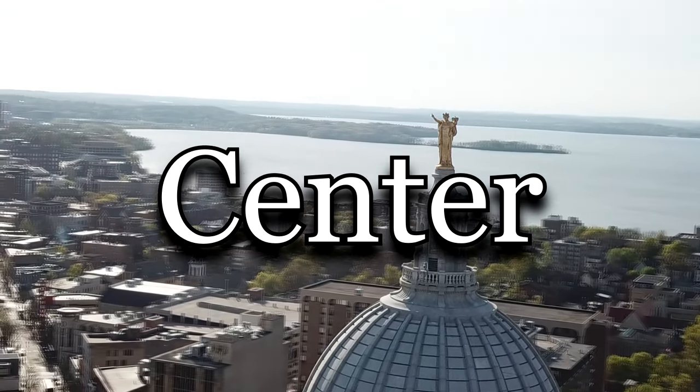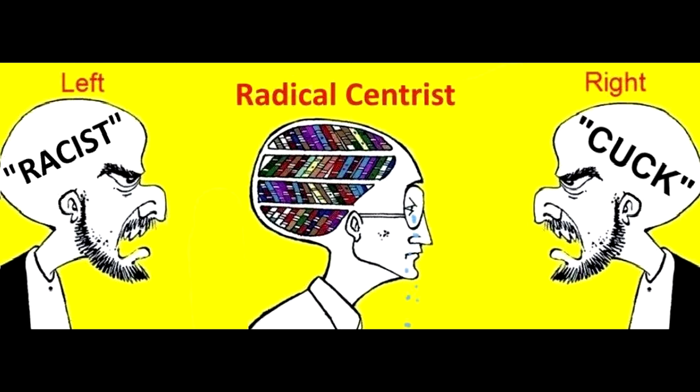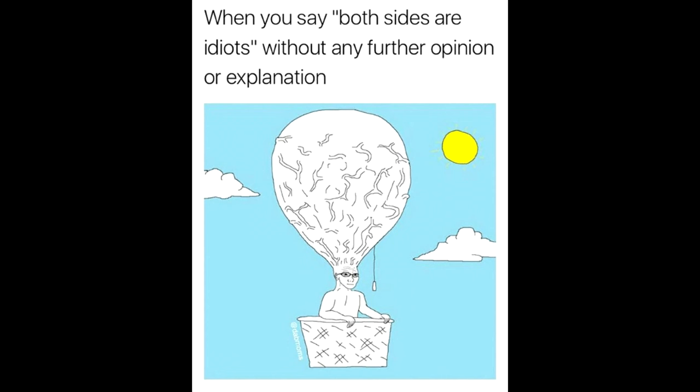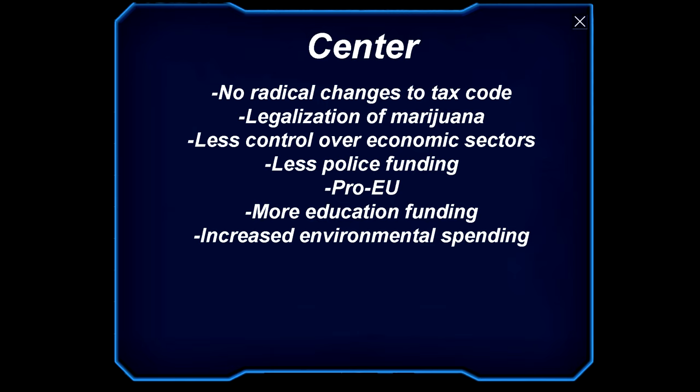Up next is center. This party can be considered the most neutral of all the parties, with usually equal support for what can be considered liberal and conservative policies. Nations that have this party in power include France and Ukraine. Support for policies include moderate increases to welfare, liberalization of freedoms, and the privatization of economic sectors.